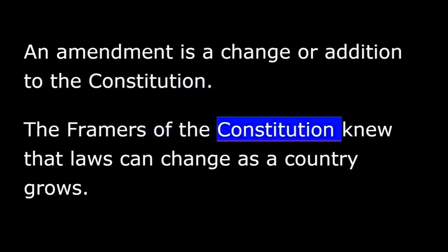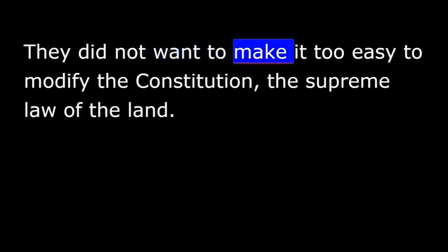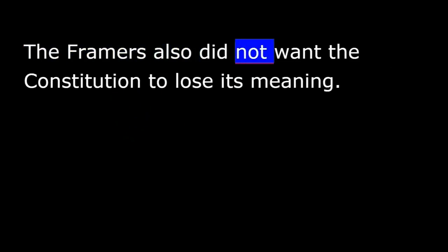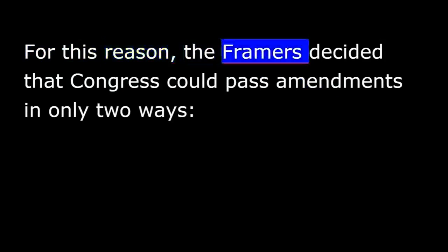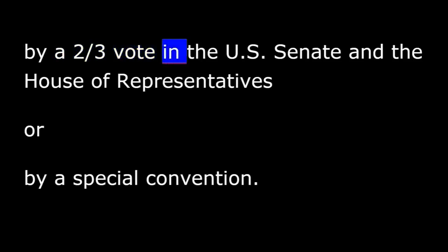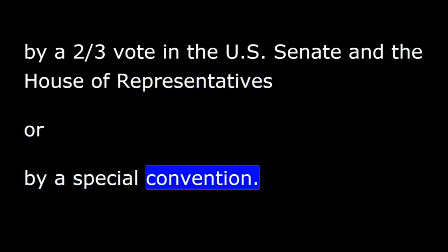The framers of the Constitution knew that laws can change as a country grows. They did not want to make it too easy to modify the Constitution, the supreme law of the land. The framers also did not want the Constitution to lose its meaning. For this reason, the framers decided that Congress could pass amendments in only two ways: by a two-thirds vote in the U.S. Senate and the House of Representatives, or by a special convention. A special convention has to be requested by two-thirds of the states.